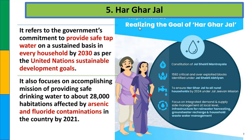हाल ही में जल शक्ति मंत्रालय create की गई है जो इससे मिलती-जुलती है. Rural households को 2024 तक piped drinking water ensure करना जल जीवन Mission के अंदर आएगा, और 'हर घर जल' एक और initiative है. दोनों का difference यह है - जल जीवन Mission केवल rural households पर focus करता है, जबकि हर घर जल में overall देश के सभी घरों में pipe drinking water supply शामिल है.